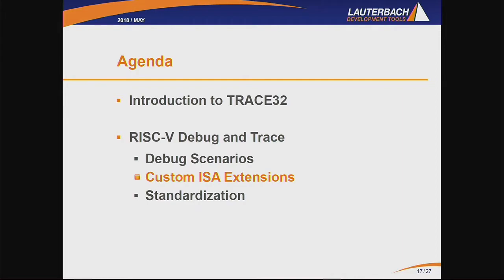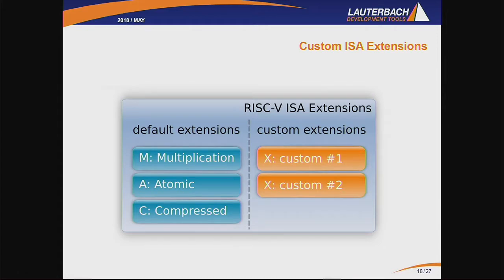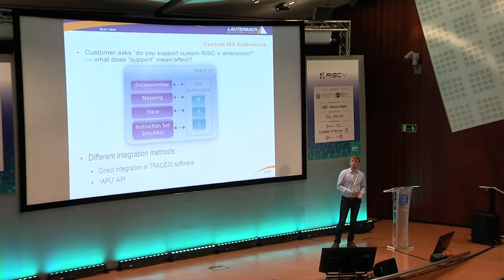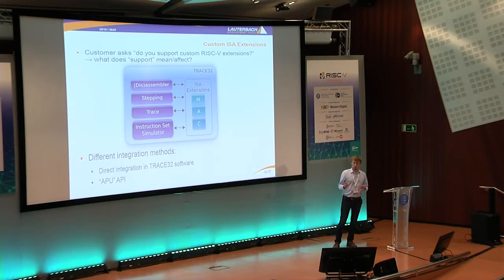Now about the support for custom ISA extensions. There are two categories: the default extensions for the RISC-V ISA, like multiprocessing, atomic, and compressed, but the ISA also defines possibilities to extend it with custom tailored extensions. We try to provide possibilities to support that as well. If somebody asks whether we can support custom RISC-V extensions, you should be aware of what that actually means. Most obviously, the disassembler and assembler need to be available for displaying the additional mnemonics, but it also affects stepping and trace — in particular if you have instructions that alter the program flow. Also, the instruction set simulator needs to simulate the new instruction behavior.